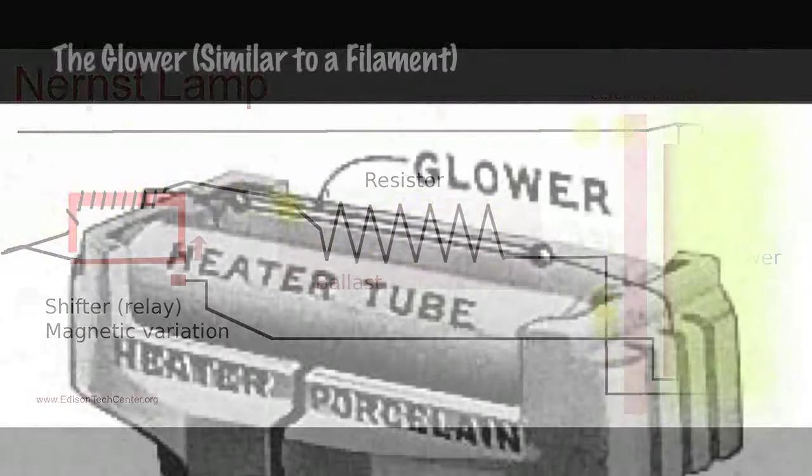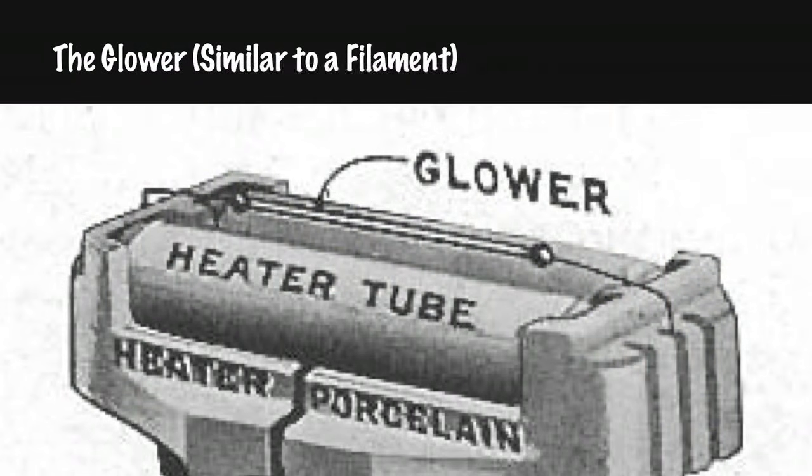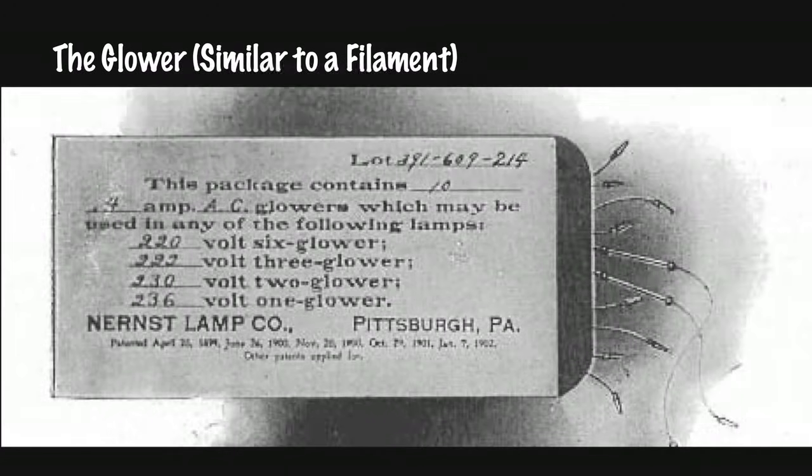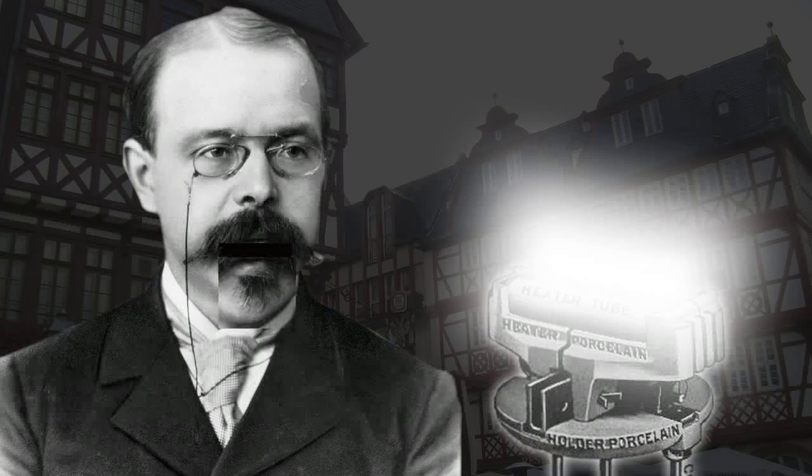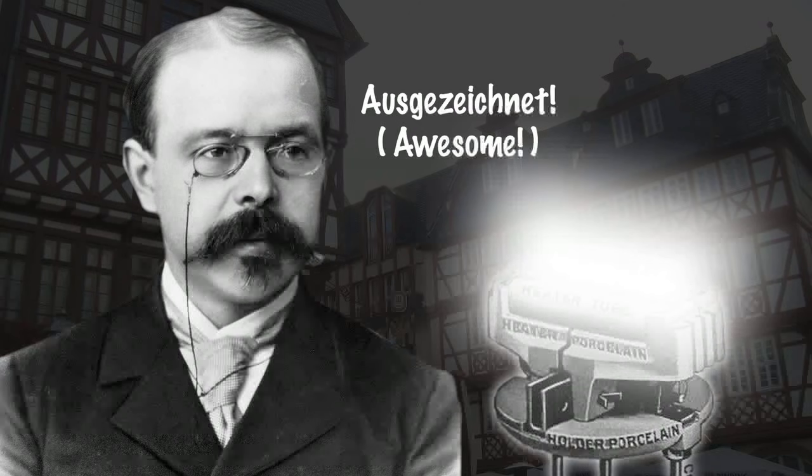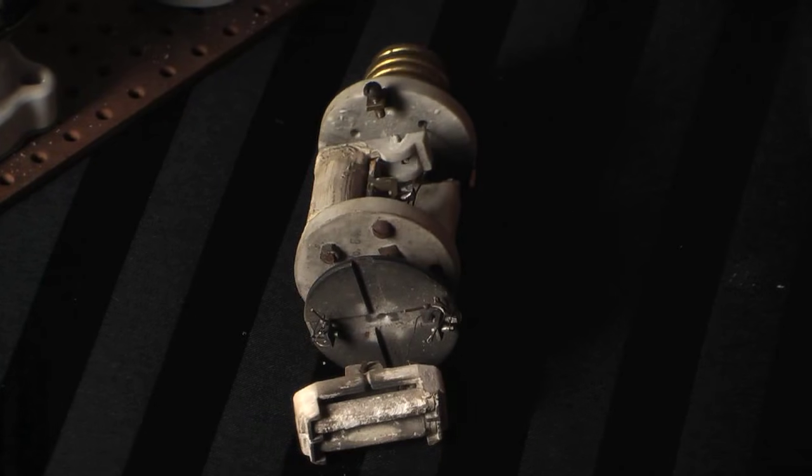But what's amazing is that the glower being made out of an oxide, it can't burn anyway because it's already an oxide, it's already oxidized. So it can run directly in the air without a vacuum, which is very interesting for an incandescent lamp. And it's the only incandescent lamp that I know of that could run directly in the air.